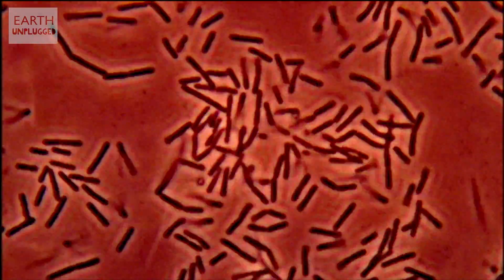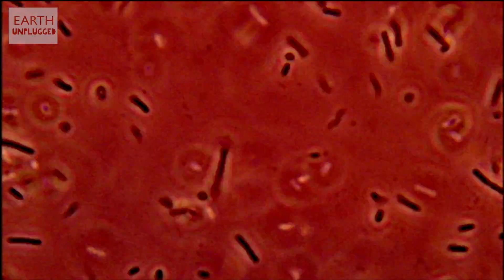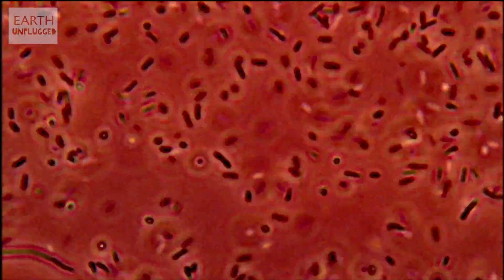ecologist Rob Dunn and his team asked 60 people at a science fair to swab their belly buttons. Then, back in the lab, the team examined their bacterial bounty, and to their surprise, they found a grubby haul of over 2,300 species, with more than 1,400 of them being potentially unknown to science.